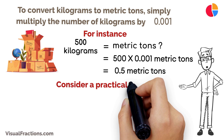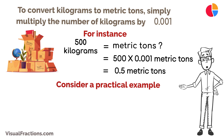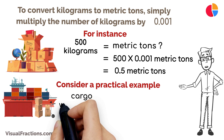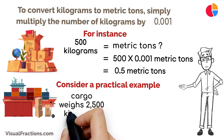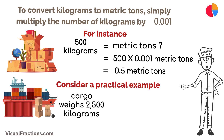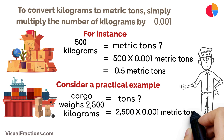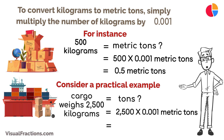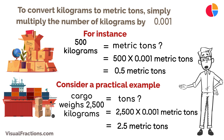Consider a practical example in the shipping industry. If a cargo weighs 2,500 kilograms and you need to document its weight in metric tons, you would multiply 2,500 kilograms by 0.001, resulting in 2.5 metric tons.